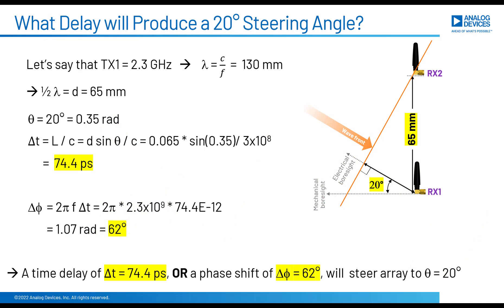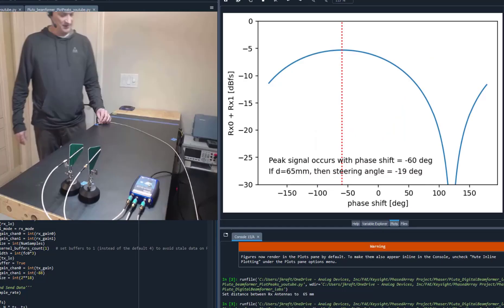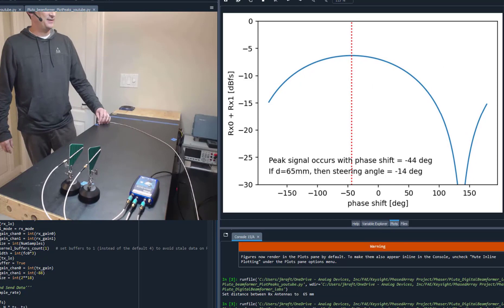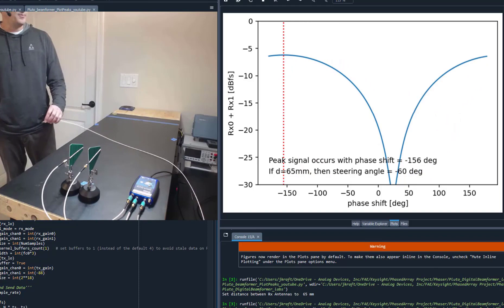You might remember this slide from the first video. We've calculated the time delay that we need to shift one of the receive antennas by. And for these conditions, that was 74.4 picoseconds. And then we converted that time delay into a phase delay, so that gave us the 62 degrees of phase delay shown there. Then we implemented the phase shifter using a simple Python program and, of course, Pluto. And that all worked as expected. We could shift the phase of the elements and accurately point the receive beam.